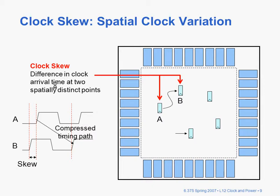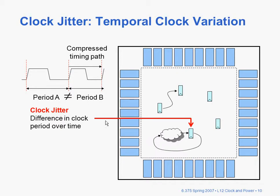A couple of problems can arise. The first is clock skew, which is a spatial clock variation — basically the difference in arrival time at two spatially distinct points. So at two different registers, the clocks arrive at different times, and that difference is called the clock skew. You can also have clock jitter, which is at one register where the clock period varies over time.